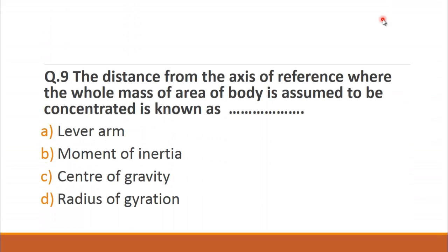MCQ number nine is: The distance from the axis of reference where the whole mass of area of a body is assumed to be concentrated is known as? The choices are A. lever arm, B. moment of inertia, C. center of gravity and D. radius of gyration. The right choice for this question is radius of gyration, D.